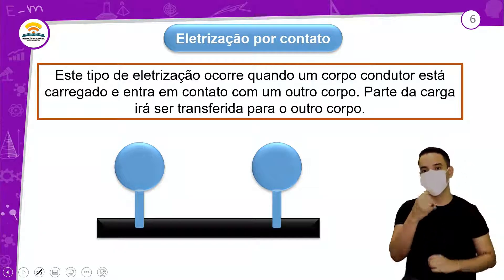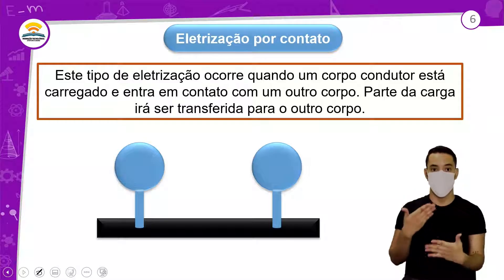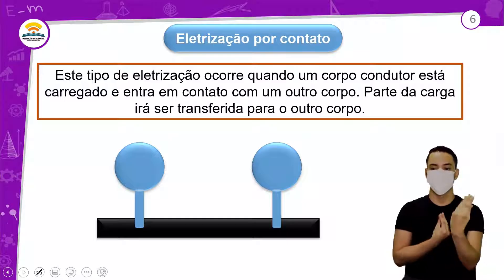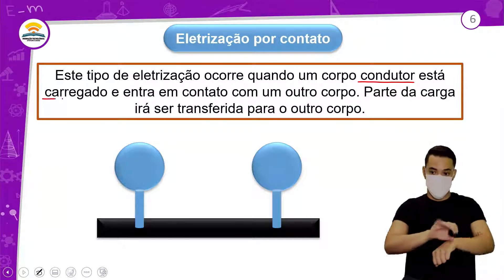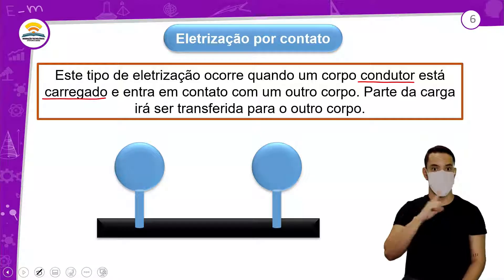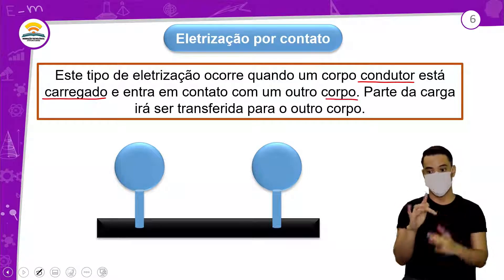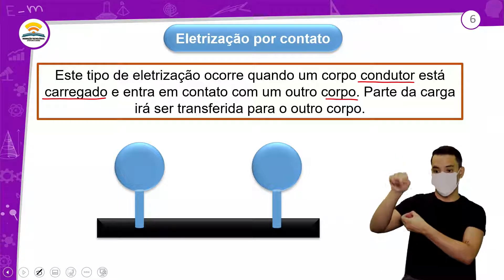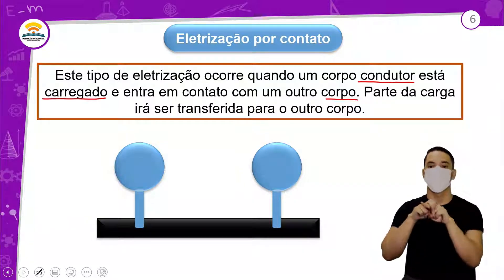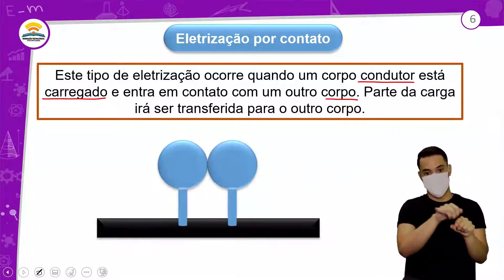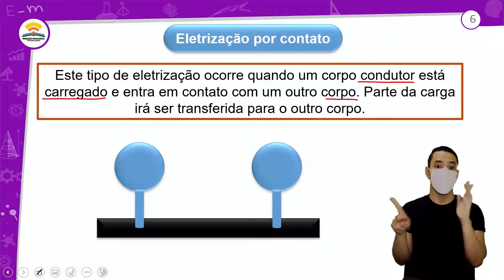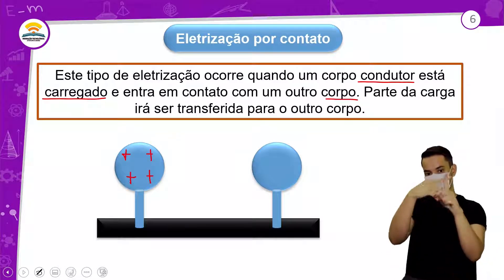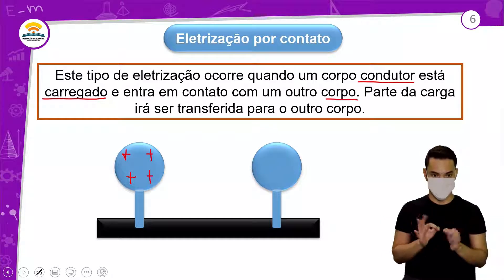Eletrização por contato: contato é tocar. Este tipo de eletrização ocorre quando um corpo condutor está carregado — pelo menos um tem que estar carregado — e entra em contato com o outro corpo, que não precisa estar carregado, pode estar neutro. Parte da carga irá ser transferida para o outro. Vamos supor que eu tenha aqui quatro elétrons — quatro cargas negativas.